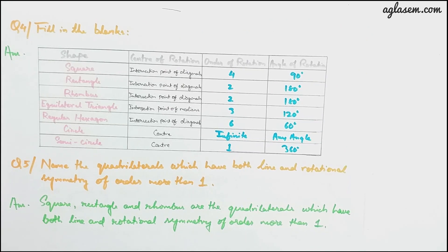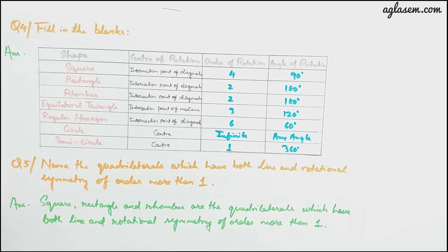For a square, the center of rotation is the intersection point of the diagonals, it has an order of rotation of 4, and the angle of rotation is 90 degrees. For a rectangle, the center is again the intersection of the diagonals, the order is 2, and the angle is 180 degrees. For a rhombus, the diagonals intersect at the center of rotation, the order is 2, and the angle of rotation is 180 degrees.